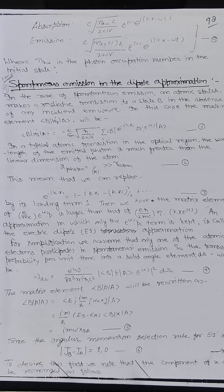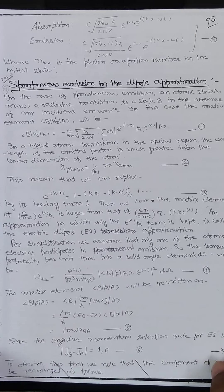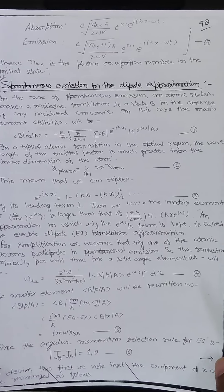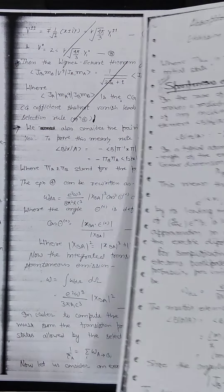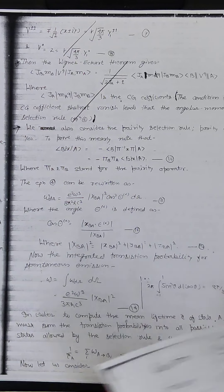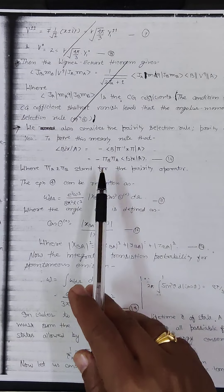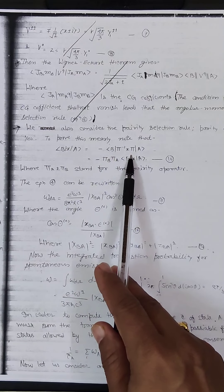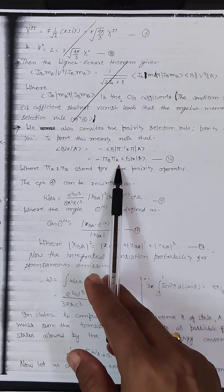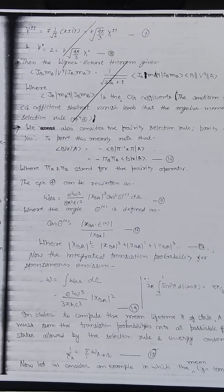The angular momentum selection rule for E1, the electric dipole transition, is |j_b - j_a| = 1 or 0. We also consider the parity selection rule — parity must change. To prove this, note that ⟨b|x|a⟩ = -⟨b|π⁻¹ x π|a⟩ = -π_b π_a ⟨b|x|a⟩, where π_a and π_b are the parity operators for states a and b respectively.